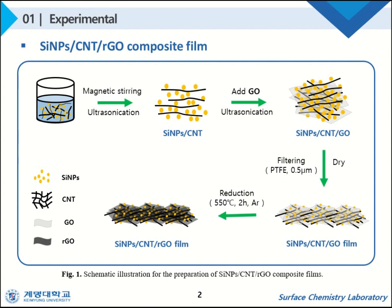The Silicon Nanoparticles, Carbon Nanotube, Graphene Oxide dispersion was vacuum filtrated using a PTFE film to obtain a composite film, which was then dried. The resulting composite film was placed in a horizontal tube furnace and the temperature was raised to 550 degrees with constant flow of argon. In this manner, a thermally reduced Silicon Nanoparticles, Carbon Nanotube, Reduced Graphene Oxide composite film was finally prepared.